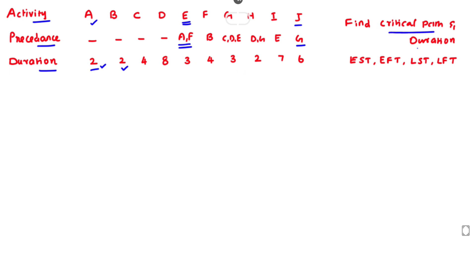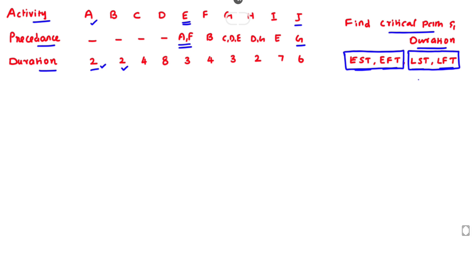We have to find the critical path and project duration, then EST (Early Start Time), EFT (Early Finish Time), LST (Late Start Time), and LFT (Late Finish Time). These tell us the earliest we can start and finish an activity, and how many days we can delay the start or finish of an activity. First, we draw the network, identify the different paths, and then finalize the critical path.